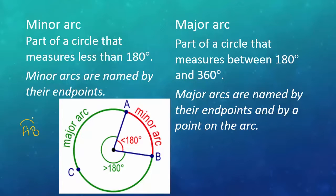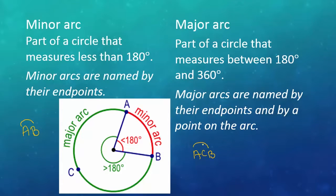Major arc: part of a circle that measures between 180 degrees and 360 degrees. Major arcs are named by their endpoints and by a point on the arc. As you can see over here, our major arc is ACB. Oftentimes when we talk about major arcs, they'll have at least three letters in their name, so it would be ACB with an arc on top of it. That is our major arc.